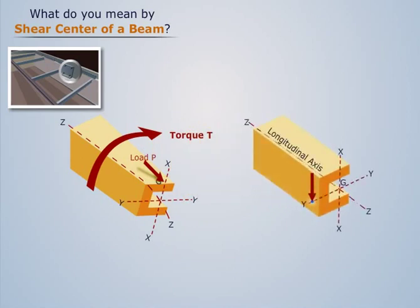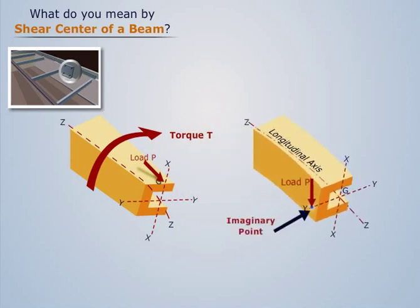Now, if we apply a load P at any imaginary point on the section, in such a way that the twisting of beam is zero, then this imaginary point is known as the shear center.